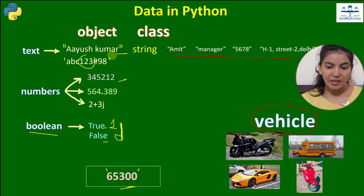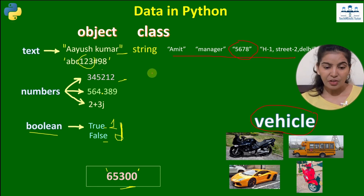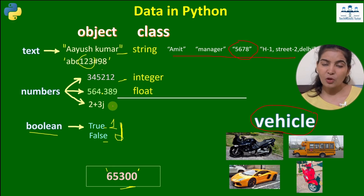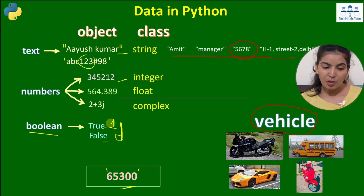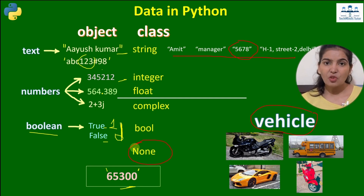All objects enclosed in double quotes are of the string class. A number enclosed in double quotes also becomes a string. Whole numbers belong to the integer class, decimal point numbers belong to the float class, complex numbers belong to the complex class, and boolean values belong to the boolean class.